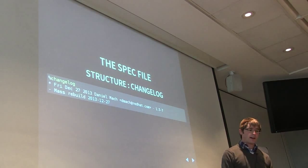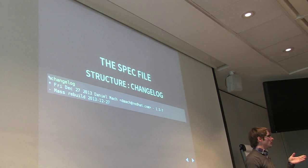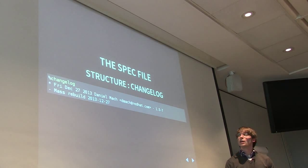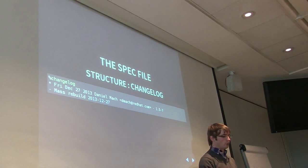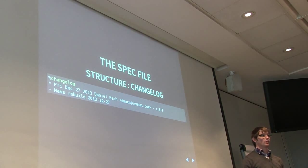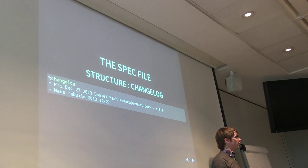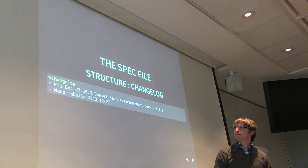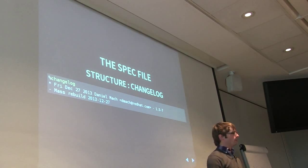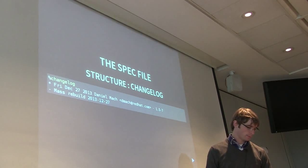At the very end we have the package changelog. This is just one entry from the Python dateutil spec file. This changelog is useful whenever you do a rebuild and need to bump either the version or the release. This is the changelog for the package - it's not the changelog for the upstream sources itself. It's always in a specific format, and there are some vim macros out there that can help you create the right format.